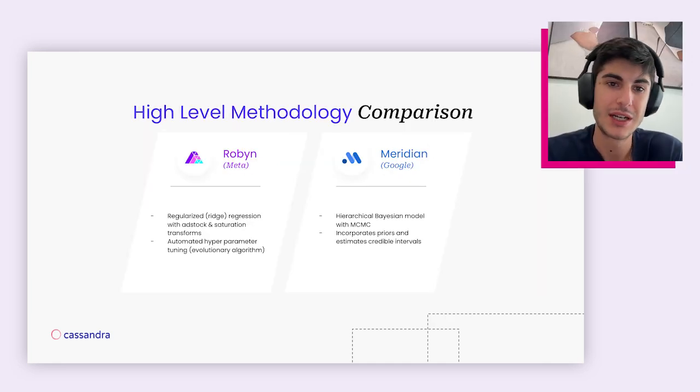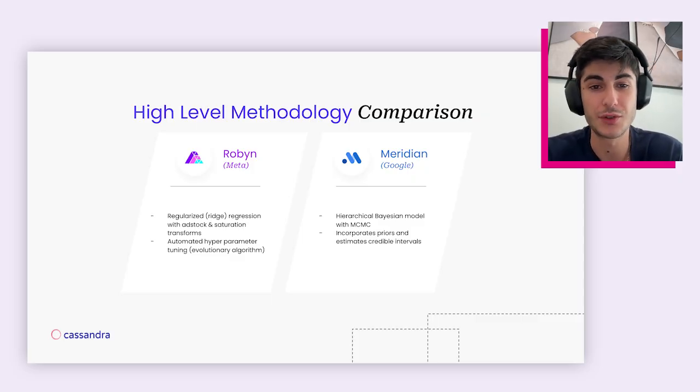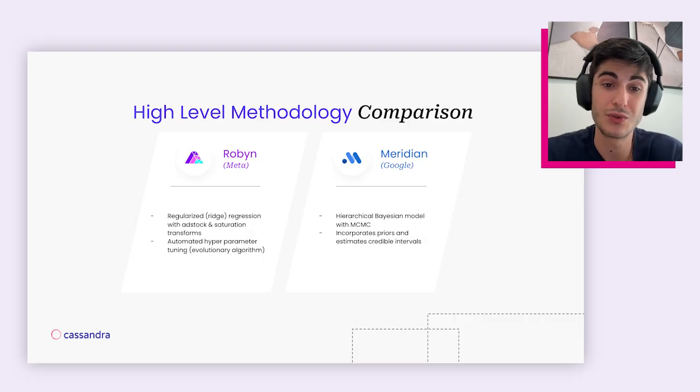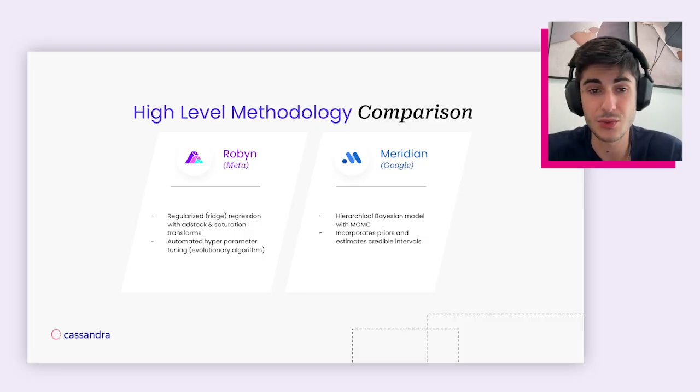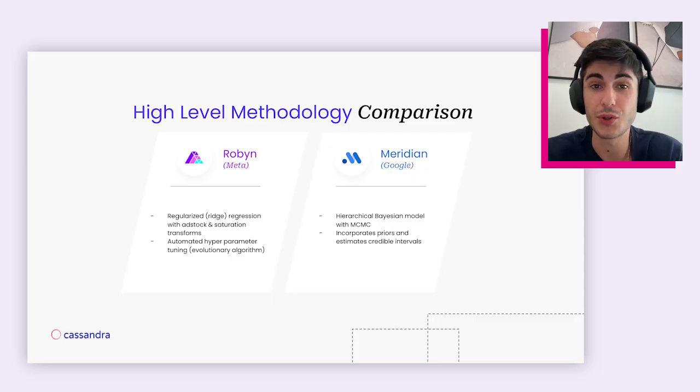At a high level strategic comparison: Robyn uses regularized regression with non-linear transformation, and also uses machine learning and reinforcement learning to figure out the parameters for every ad stock and saturation curve it estimates. Meridian doesn't use reinforcement learning, but uses Markov chain Monte Carlo simulations to figure out these parameters. They try to do the same thing with different methodologies. Robyn only requires historical data, while Meridian also requires prior settings — the ROI beliefs we have internally that need to be included in the model. As best practice, we strongly suggest using incrementality testing outputs to set these priors for Meridian, because they represent the closest thing to ground truth we can possibly estimate.